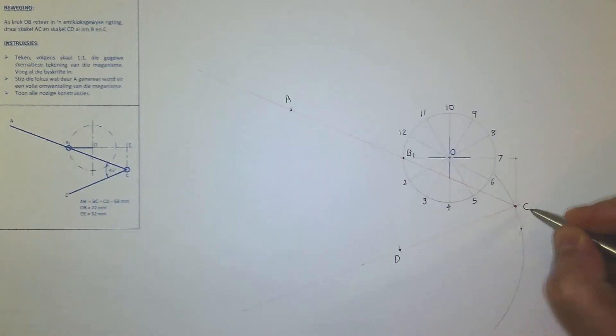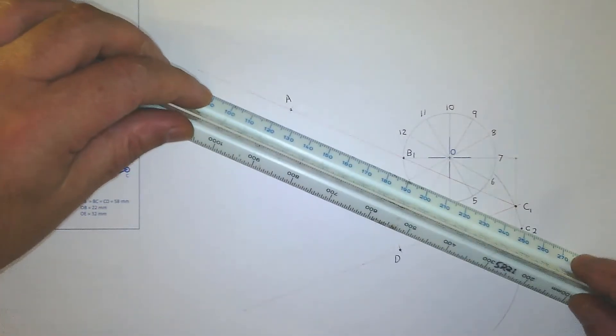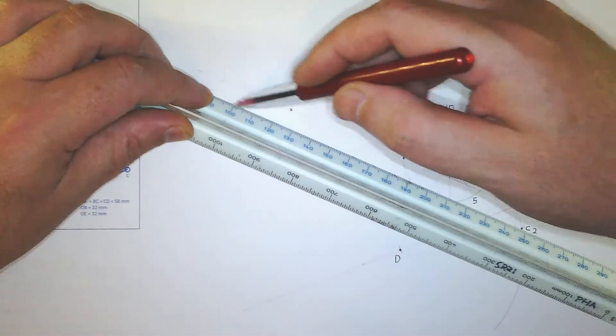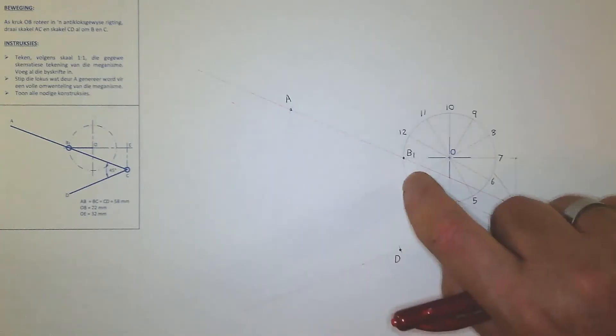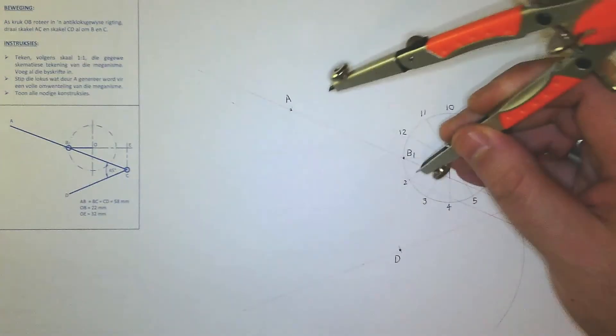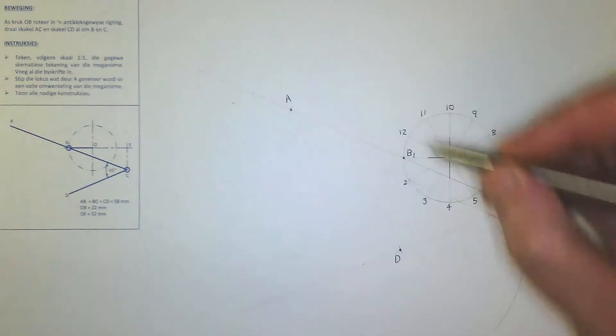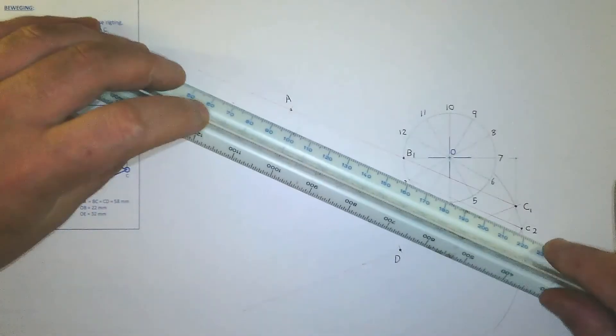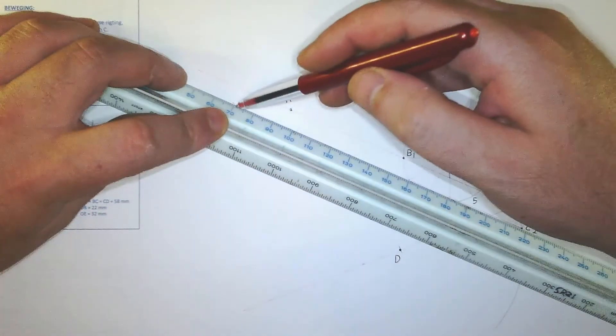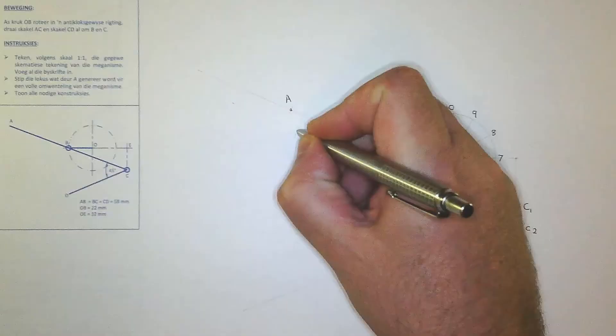So technically if this is C1, then this will be C2. All right, so then you're going to draw a construction line from C2 through to B2, so you go from C2 to B2 here, and you can draw a construction line through there. So there you can go from C2 to B2, and then because AB has the same distance of 58, you can only place it on 2 again, mark it down on the construction.